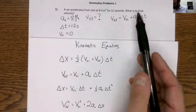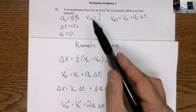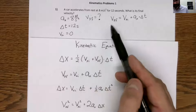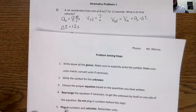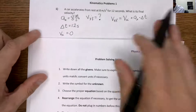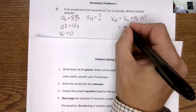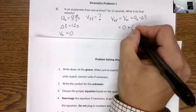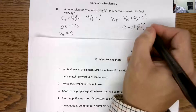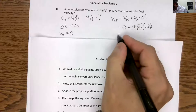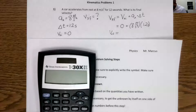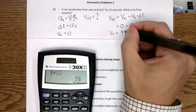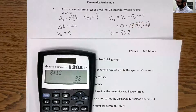Step four of the problem solving steps is to rearrange the equation if we have to — we need to get the unknown all by itself on one side. In this case, we're looking for Vxf and it's already all by itself, so we don't have to do that. Step five: plug in our numbers and calculate. The initial velocity was zero, the acceleration is eight meters per second squared, and the time is 12 seconds. So for my final velocity I just get eight times 12, which is 96 meters per second.